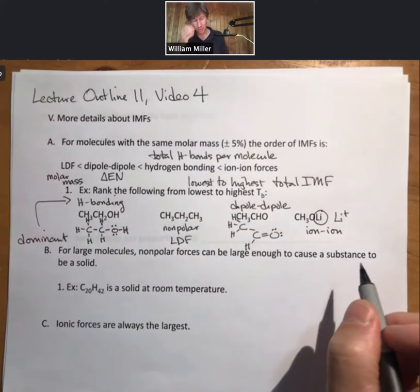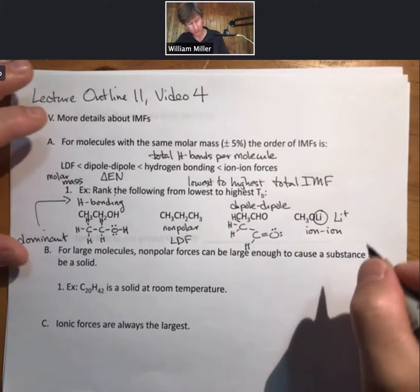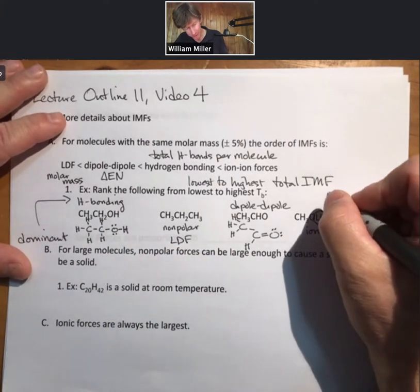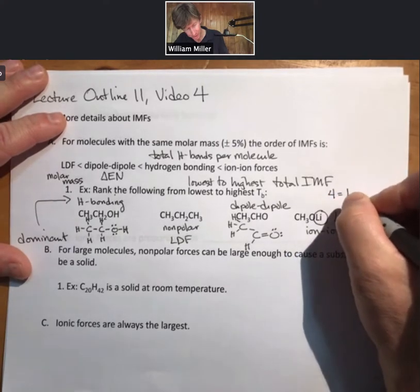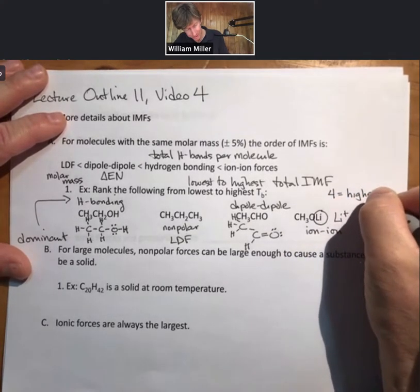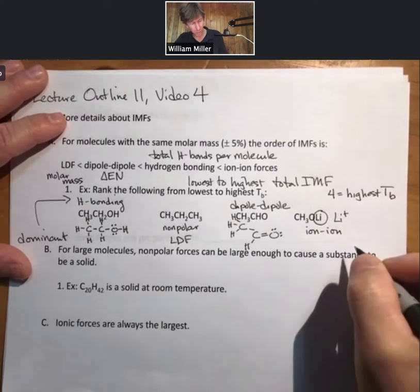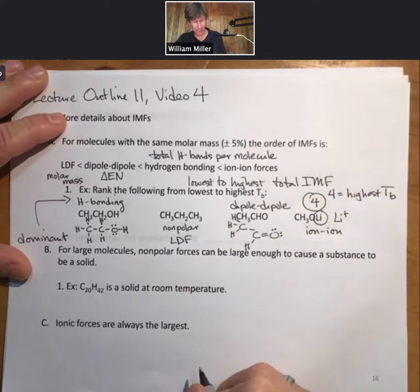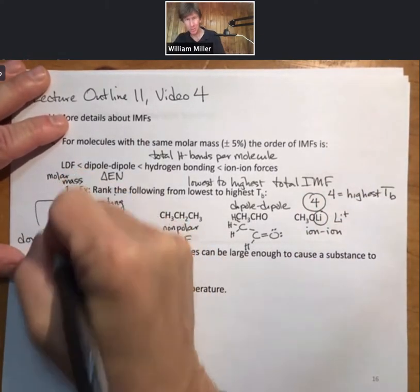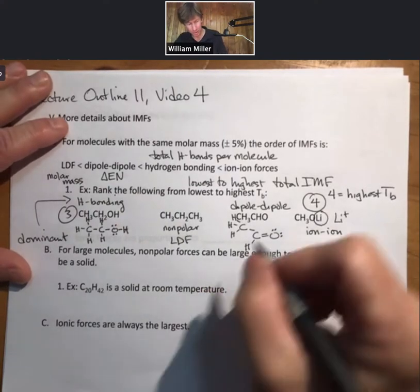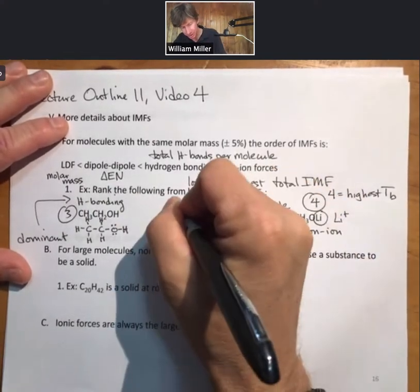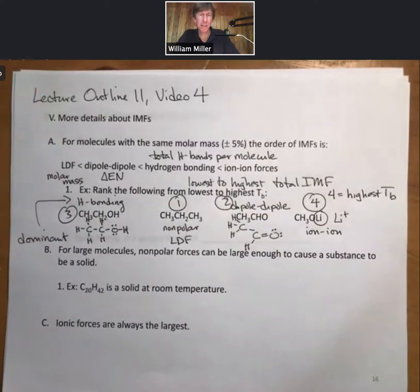When it says rank the following from lowest to highest boiling point, 4 has the highest boiling point, that's ion-ion. 3 is going to be hydrogen bonding. 2 is going to be dipole-dipole forces. And 1, nonpolar LDF.